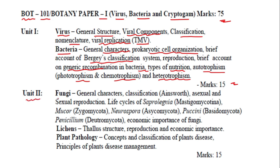In unit 2, it will include fungi — the general characters of fungi, classification proposed by Ainsworth, and asexual and sexual reproduction. Life cycles covered separately include Mastigomycotina, Mucor/Zygomycota, Neurospora, Deuteromycota, and the economic importance of fungi.